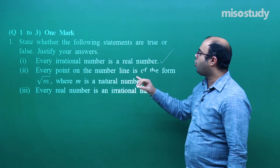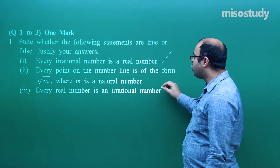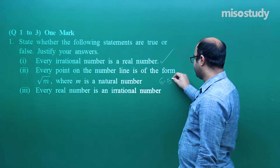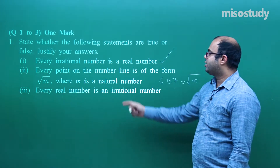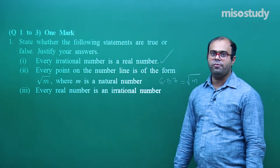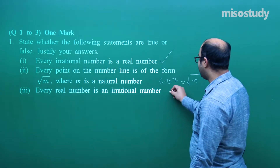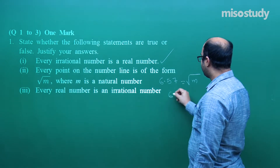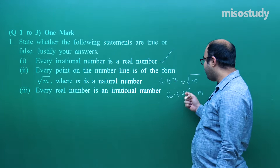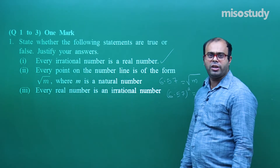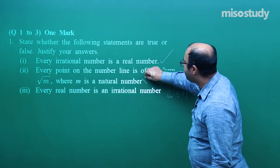Second statement: every point on the number line is of the form √m where m is a natural number. This is not true. Suppose we take the number 6.57 — can we write it in the form √m where m is a natural number? If so, then 6.57 squared must be a natural number, but it is not; it will be some rational number but not a natural number. So this statement is false.